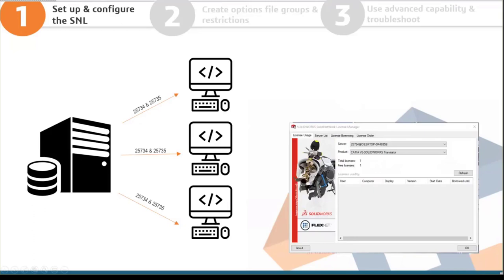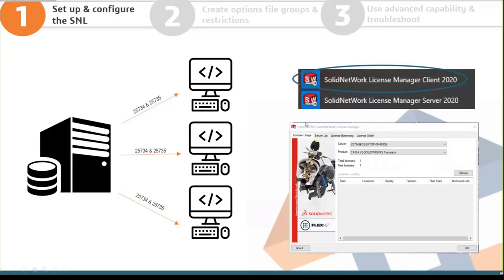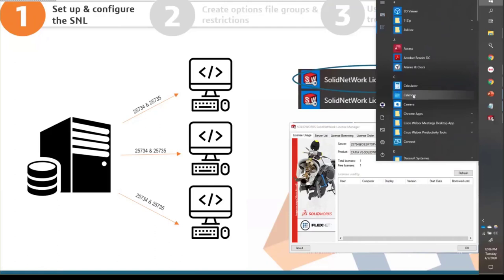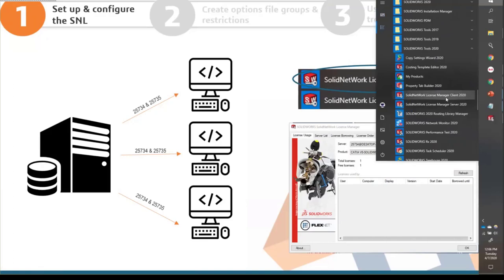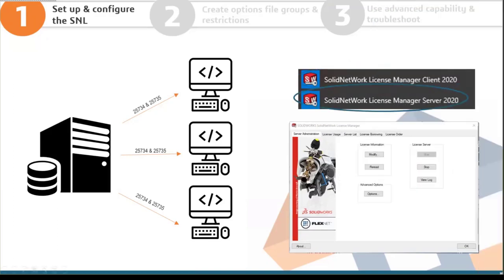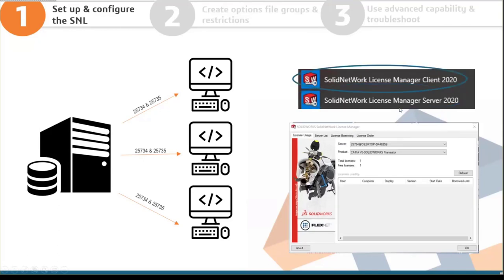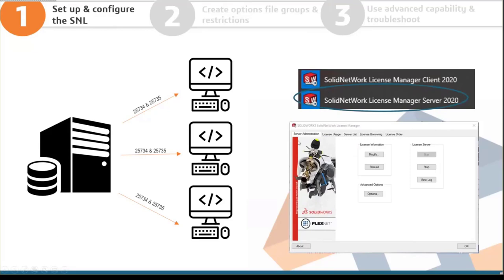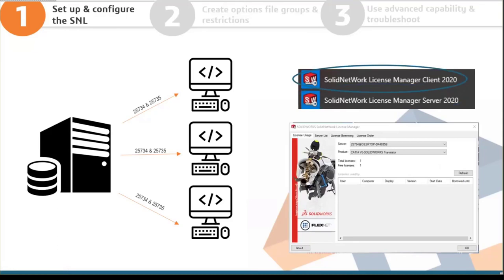To tell what version your SNL is: when it gets installed, two components are installed. On every client there is the Net License Manager client version. On the server computer, there's also the SolidNet License Manager server. The client has four tabs, and the server gets an extra server administration tab — they're almost exactly the same except for that additional tab.